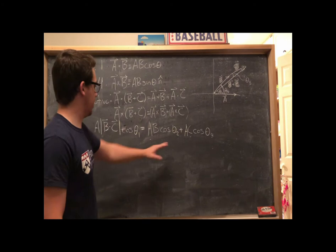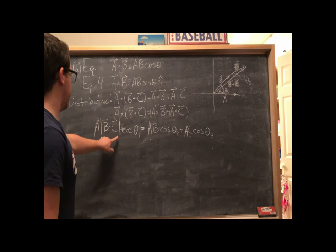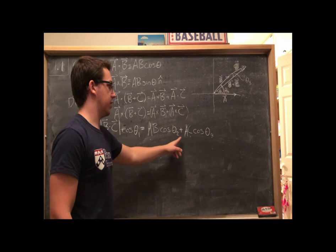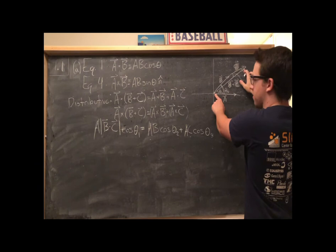Now, what we want to do is show that these are equal. And it's not too hard to do that. I mean instantly we can just cross out the magnitudes of A because those are equal. And so our task then is to say, is the magnitude of B plus C times the cosine of theta one equal to B times cosine theta two plus C cosine theta three.